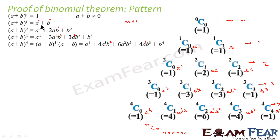For (a+b)¹ there are 1+1=2 terms. For (a+b)² there are 2+1=3 terms. For (a+b)³ it has 4 terms: 1, 2, 3, 4. When you say (a+b)⁴ it has 4+1=5 terms: 1, 2, 3, 4, 5.